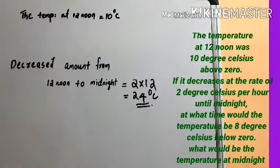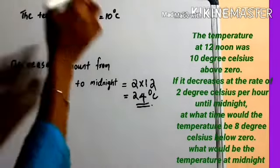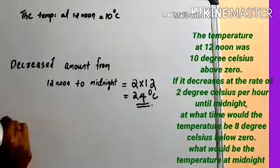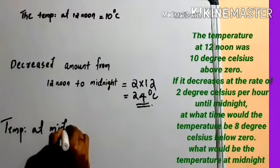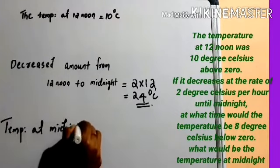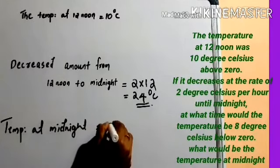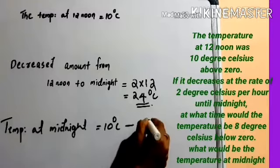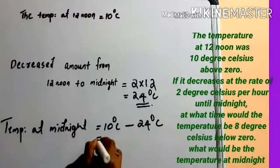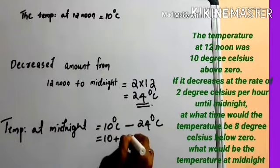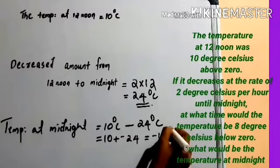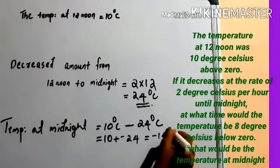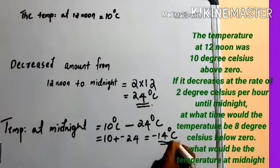What would be the temperature at midnight? The current temperature is 10 degree Celsius. Therefore, temperature at midnight equals 10 degree Celsius minus 24 degree Celsius, which equals 10 plus negative 24, equals negative 14 degree Celsius — that means 14 degree below 0.